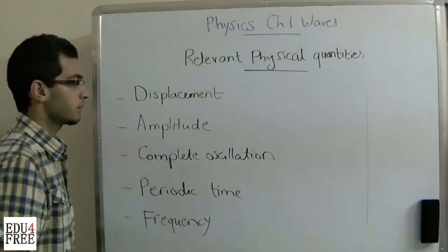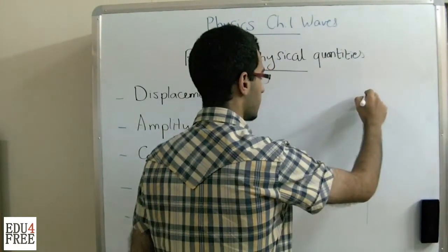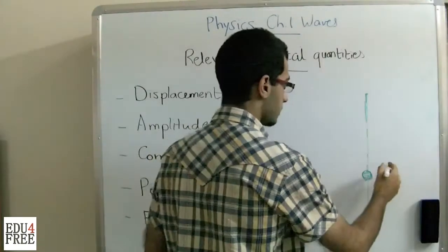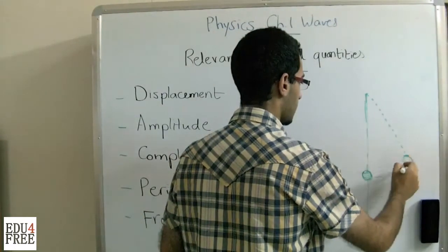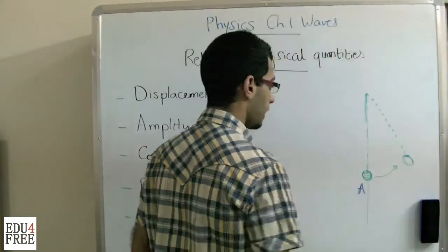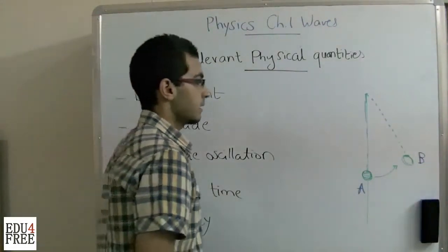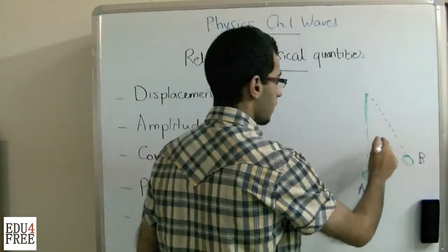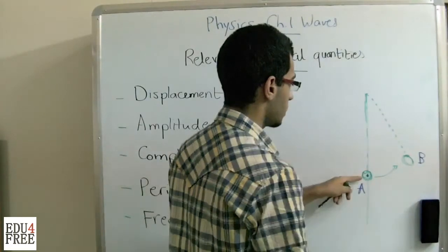First, the displacement. Let's say that we have a simple pendulum with a string, and it moves to the right. It was found at the point A, then it moved to the point B. This is a displacement. The displacement is the distance between any two points in the path of motion, or it's the distance between a point and the equilibrium position of the object.